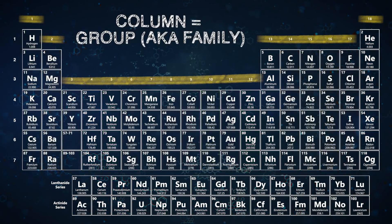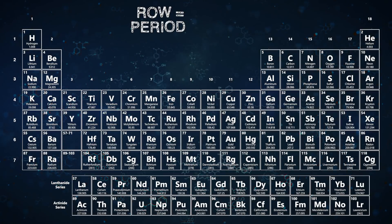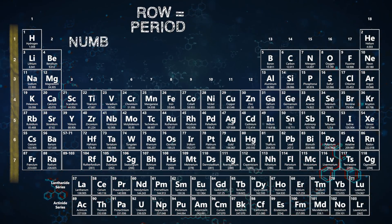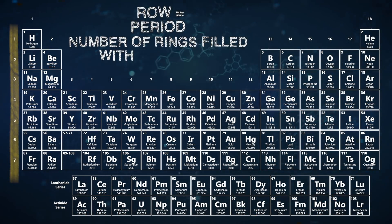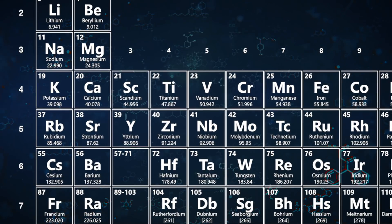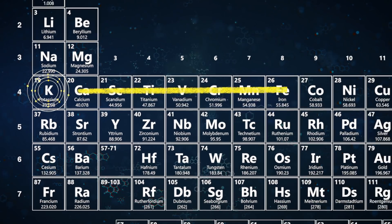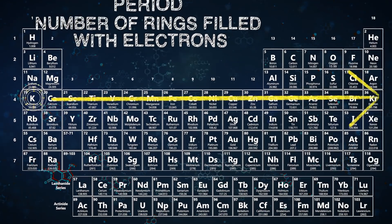The rows of the Periodic Table are called periods, numbered 1-7, and the number of the period is equal to the number of rings it has filled with electrons. Potassium, for example, lives in the fourth period, which means it, along with the rest of the elements in that period, has four rings of electrons.